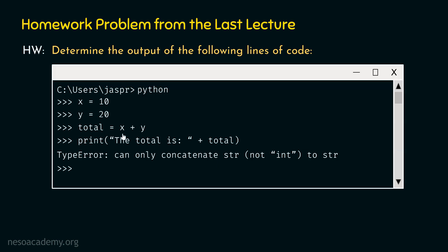Now, if we type: print('the total is: ' + total), as soon as we hit enter we get the error message: TypeError — can only concatenate str not int to str. Within this print function, we have the string 'the total is: ' followed by a white space, and we are using the plus operator to concatenate this string with the result of total.